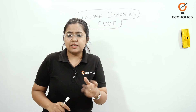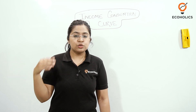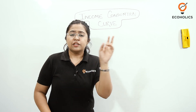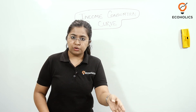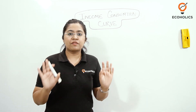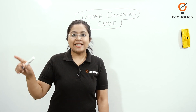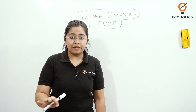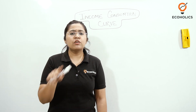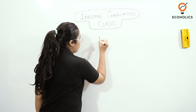When we learn about the consumer's equilibrium, we normally use the indifference curve to establish the point that the indifference curve tells us various combinations of two goods which give the same amount of satisfaction to the consumer. So on an indifference curve, a consumer is going to derive the same amount of satisfaction from whatever combinations of these two goods are chosen.